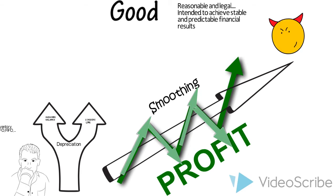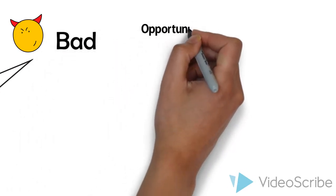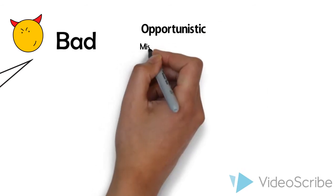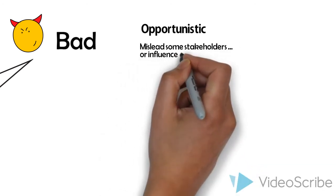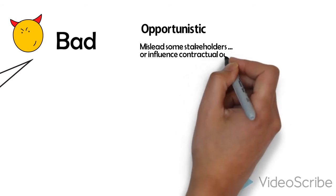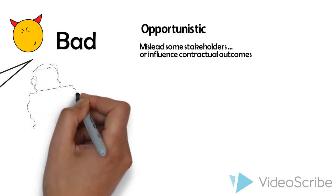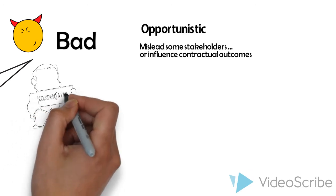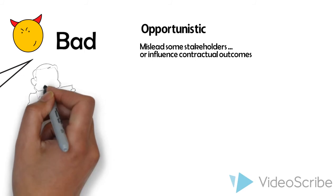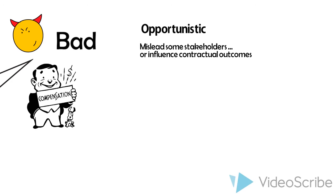But whether judgment and choice is used for good or bad depends on the motives of the manager. If used opportunistically, earnings management is about managers using their discretion to manipulate cash flows, structure transactions, and change the way transactions are reported in order to mislead some stakeholders about the underlying economic performance or to influence the contractual outcomes. One motive that managers may have to be opportunistic in earnings management is to increase their compensation. The bonus plan hypothesis recognizes how the specifics of the bonus plan create incentives to either increase or decrease profit in a particular period.